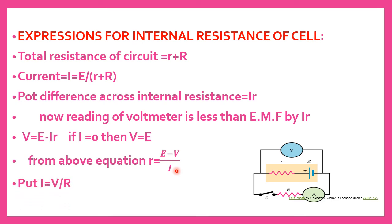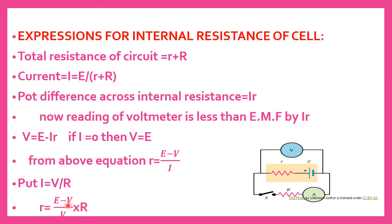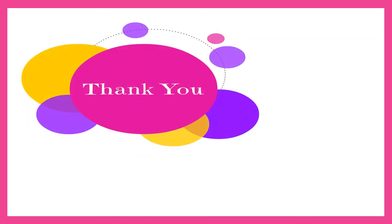Substituting I equals V divided by capital R into the expression, we get the full formula for internal resistance. Note down this expression. Numerically, you can relate EMF, terminal potential difference, and the given value of external resistance R to calculate the internal resistance.